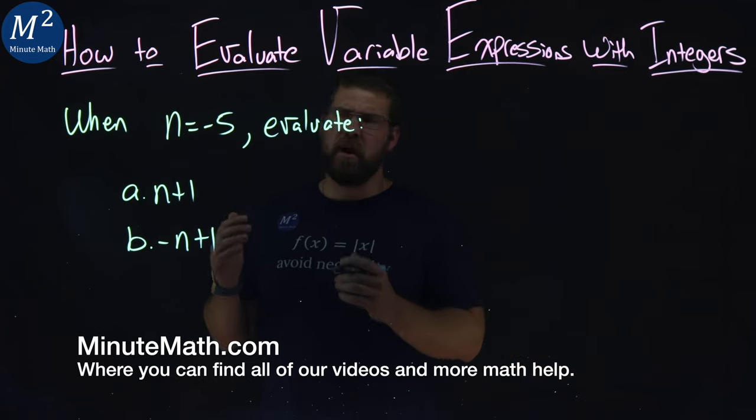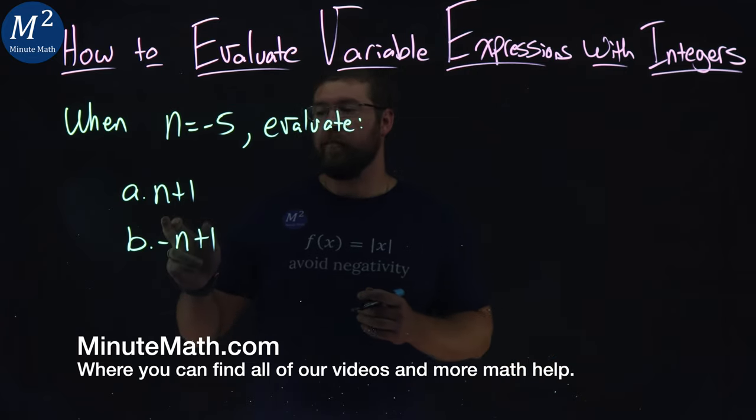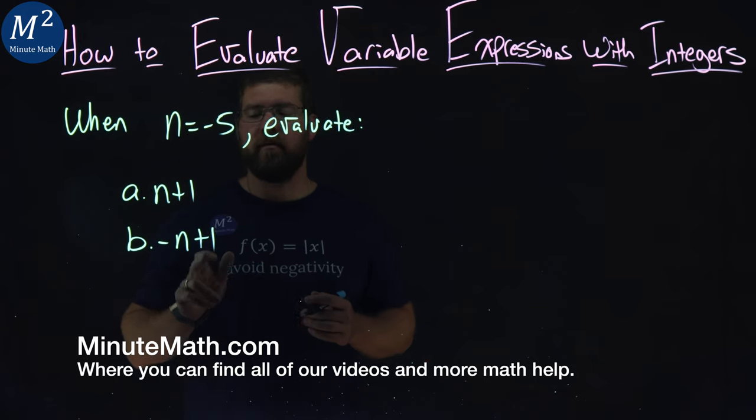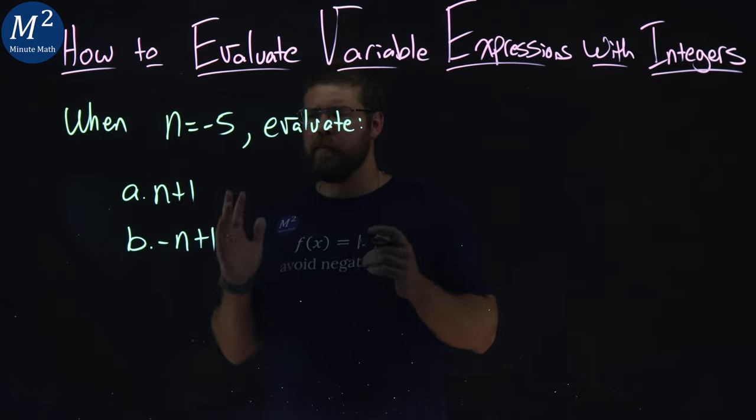We're given this problem. When n equals negative 5, evaluate n plus 1 and negative n plus 1. This is a little different than our previous problem. Let's start with part A.